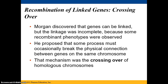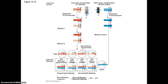Morgan discovered that genes could be linked but the linkage was incomplete because some recombinant phenotypes were observed. He proposed that there must be some process that might occasionally break a physical connection between genes on the same chromosome. Later it was determined that that mechanism was the crossing over of homologous chromosomes during prophase I of meiosis.